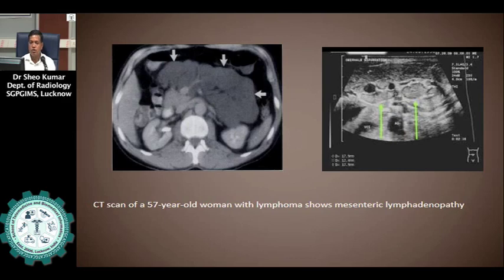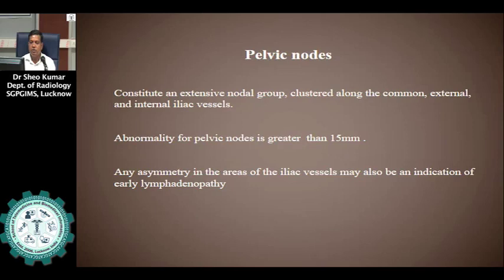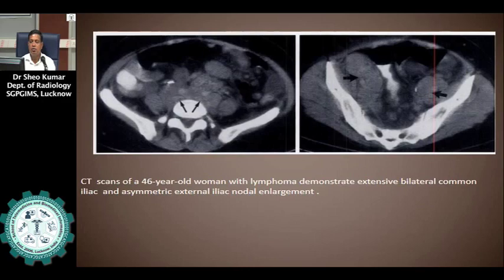The pelvic nodes constitute an extensive nodal group clustered along the common, external, and internal iliac vessels. Abnormality for a pelvic node is greater than 15 mm. However, any asymmetry in the areas of the iliac vessels may also be an indication of early lymphadenopathy. A CT scan shows bilateral common iliac lymphadenopathy and left external iliac nodal enlargement.